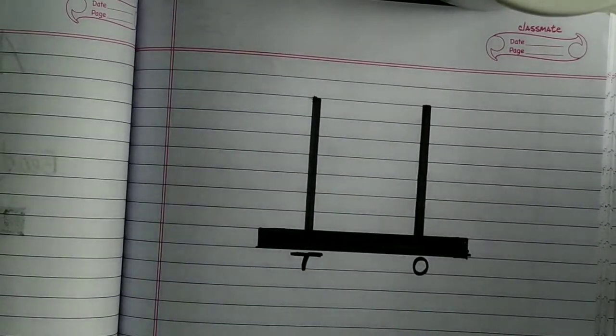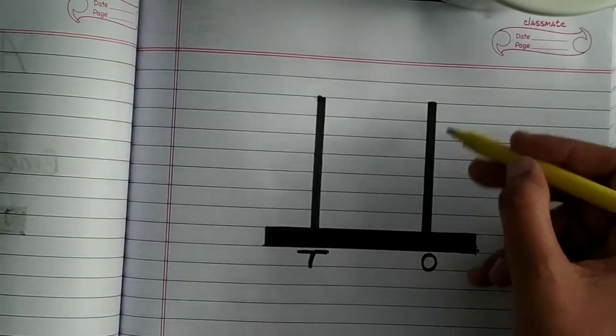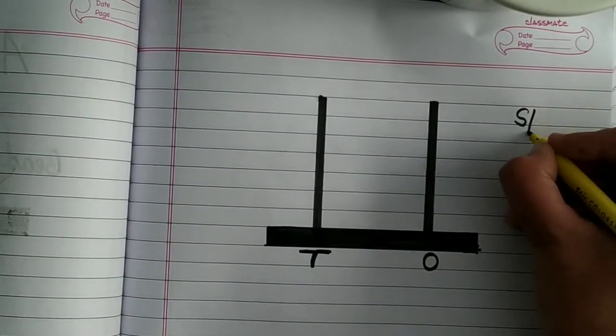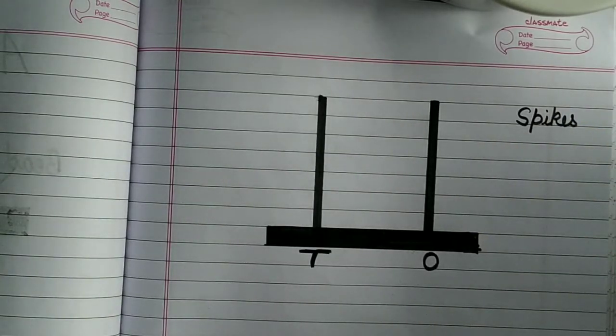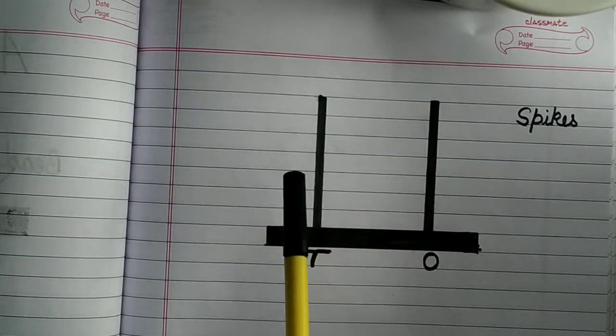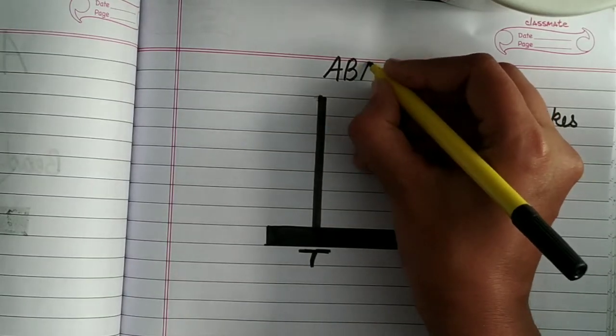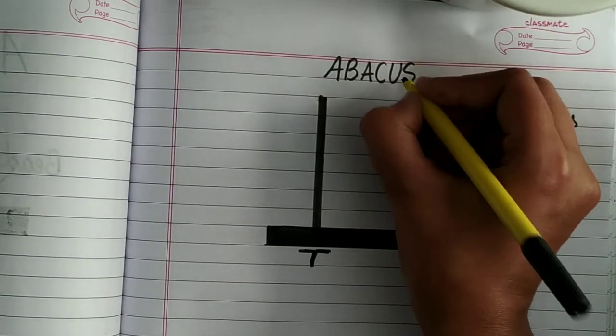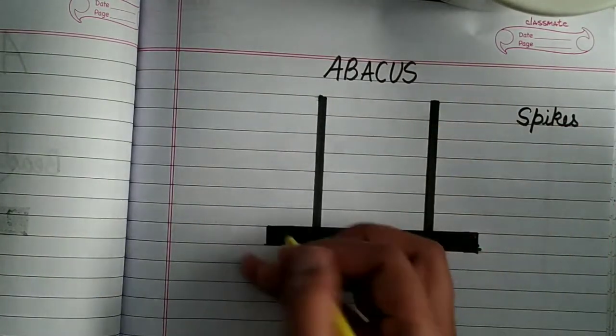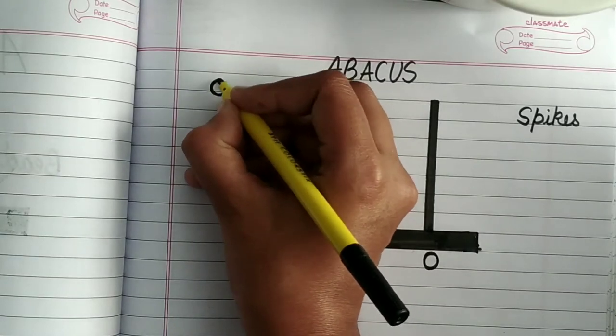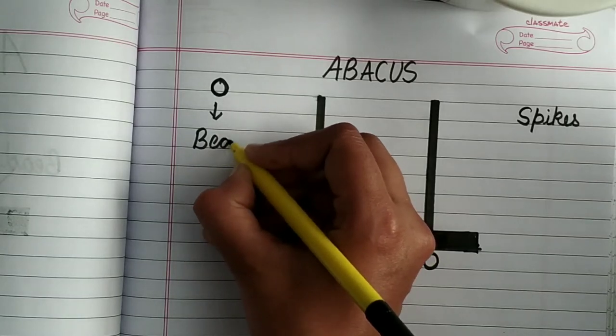So I am repeating this again that these rods. What are these rods known as? Spikes. S-P-I-K-E-S. So don't call it rod. These are spikes of an abacus. So you must know these terms. These are spikes and the circles that I make are known as beads. These are beads.